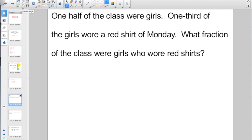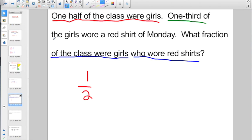Check out how it applies to story problems. 1 half of the class were girls. 1 third of the girls wore a red shirt on Monday. What fraction of the class were girls who wore red shirts? Well, to start off with, if they want to know what fraction of the class were girls, I got it right over here. 1 half of the class were girls. So I'm going to start off with 1 half. And they also want to know what fraction of the class who wore red shirts. Well, where do I have that information? 1 third of the girls wore a red shirt. So I'd end up going 1 half of 1 third. And again, of means to multiply.